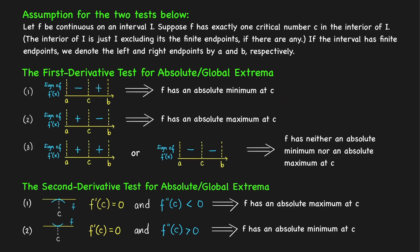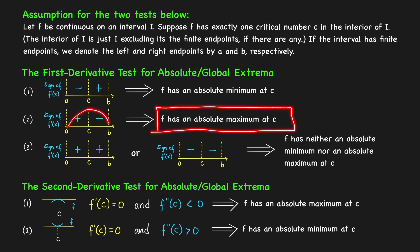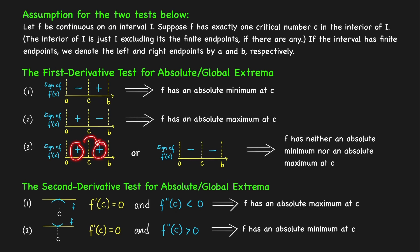Second case: if the sign of the derivative changes from positive to negative at c — meaning f is increasing on the left and decreasing on the right of c — then we can conclude that f has an absolute maximum at x = c. But if the derivative does not change sign at c (positive to positive or negative to negative), then the function has neither an absolute minimum nor an absolute maximum at c.